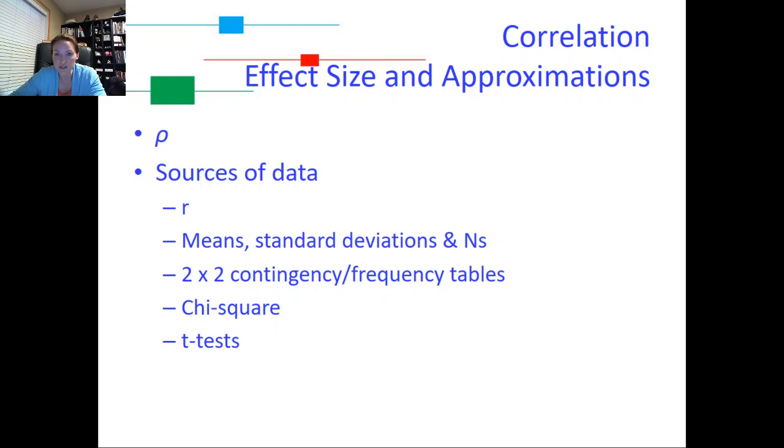So the correlation effect size. The effect size for this type is going to be rho, which is that first symbol on that slide there. It looks sort of like a P, but it's actually the rho symbol. And so the primary source for that effect size is going to be R. So it's going to be a bivariate correlation between two variables.